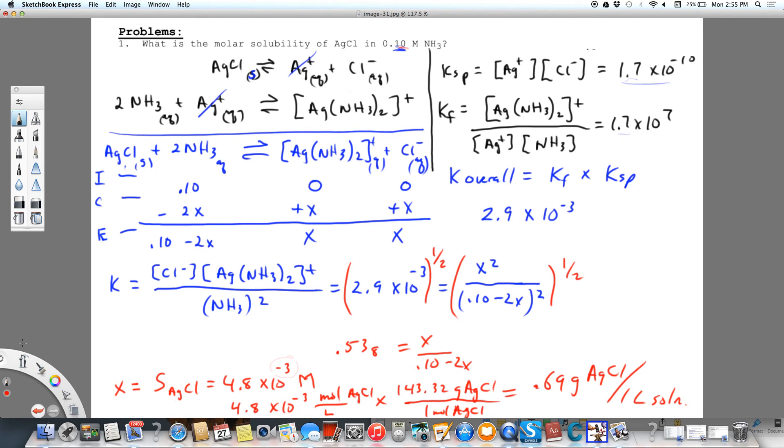This is a way we could separate out maybe two ions that both precipitate with chloride. Lead 2+ will also precipitate with chloride and silver. So if lead 2+ does not form a complex with ammonia, we would be able to separate out the two by adding the ammonia and complexing the silver, and then adding chloride, which would react with the lead 2+. And that would be a way of separating two ions that are in group one with silver, mercury, and lead.